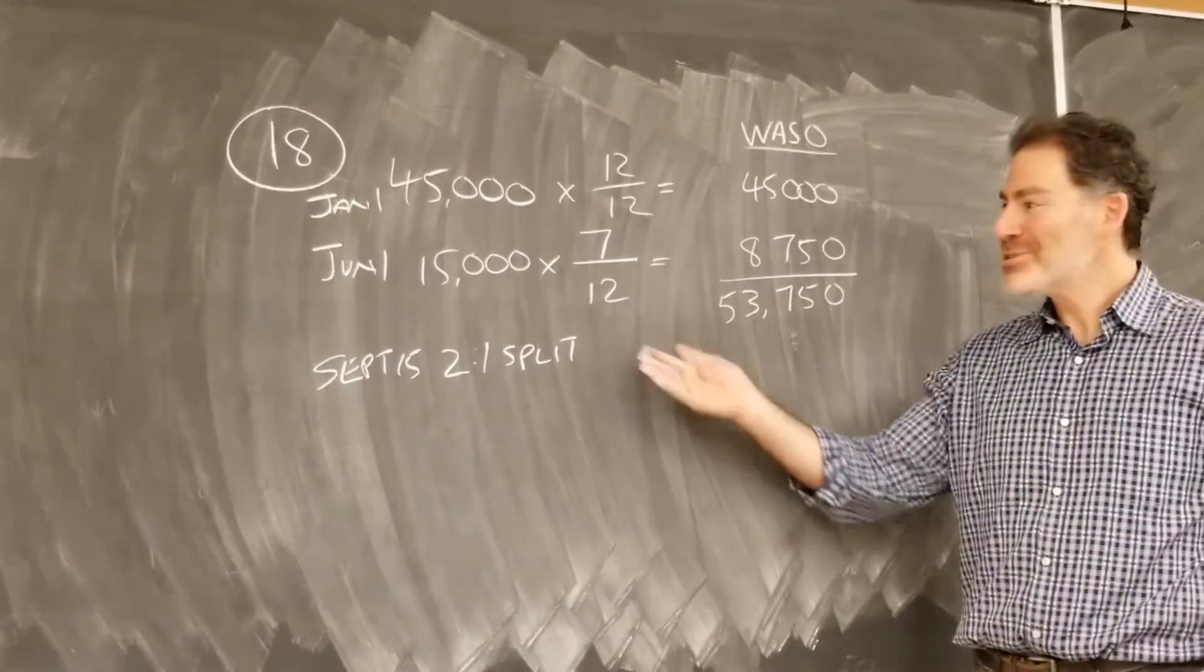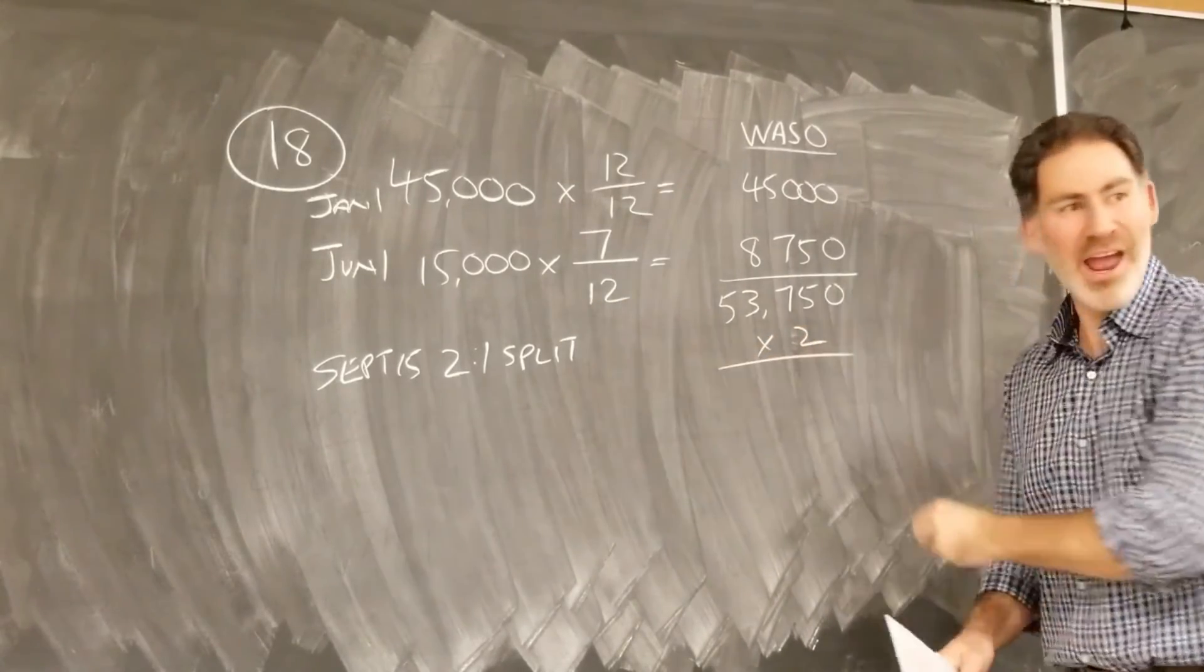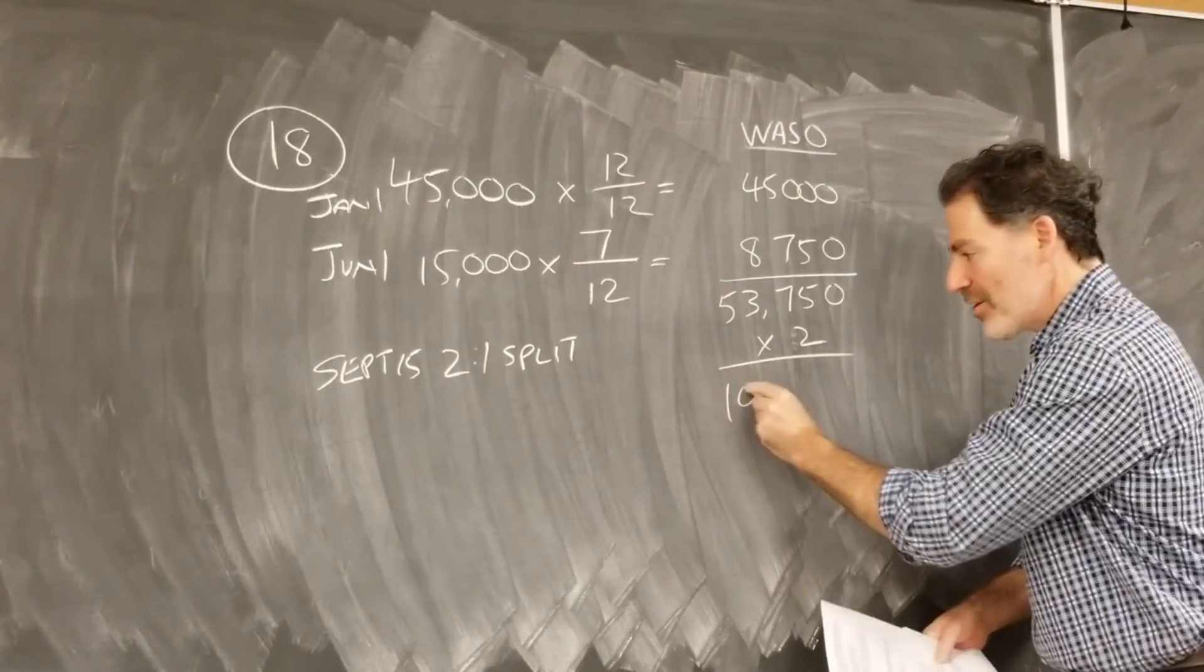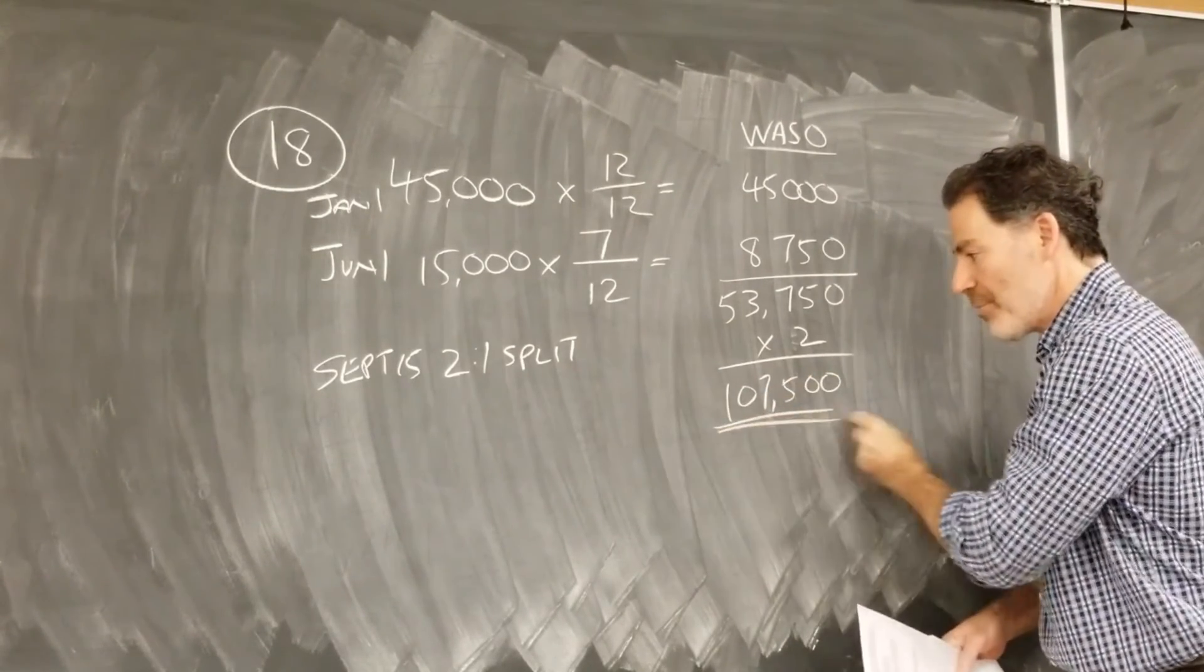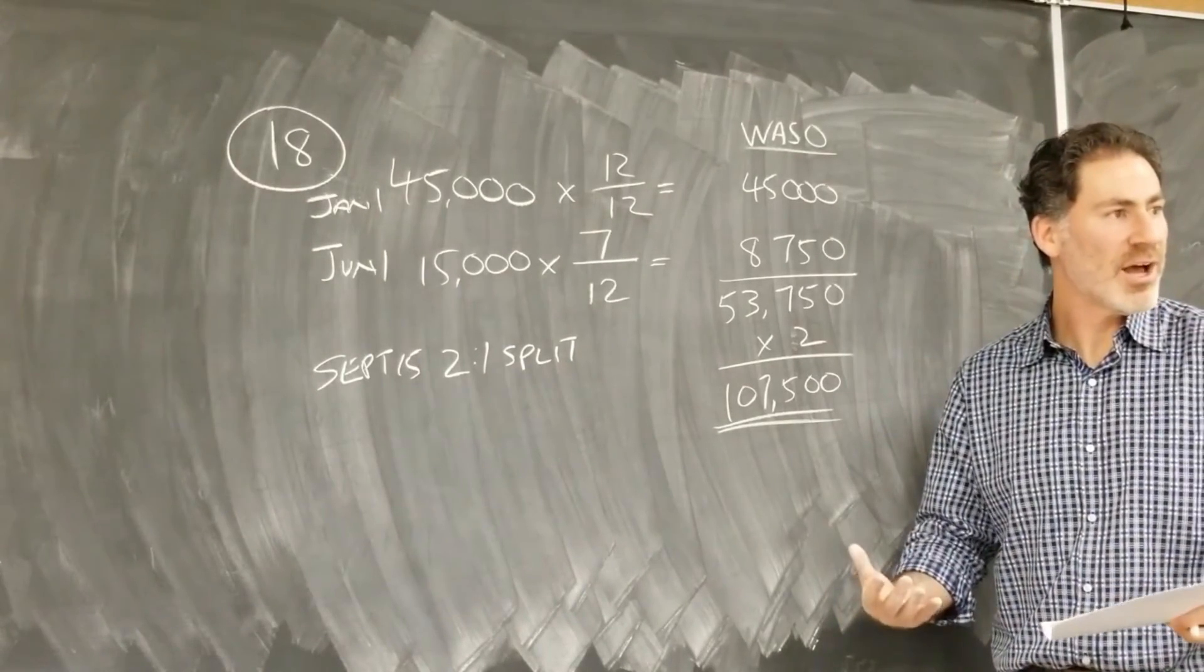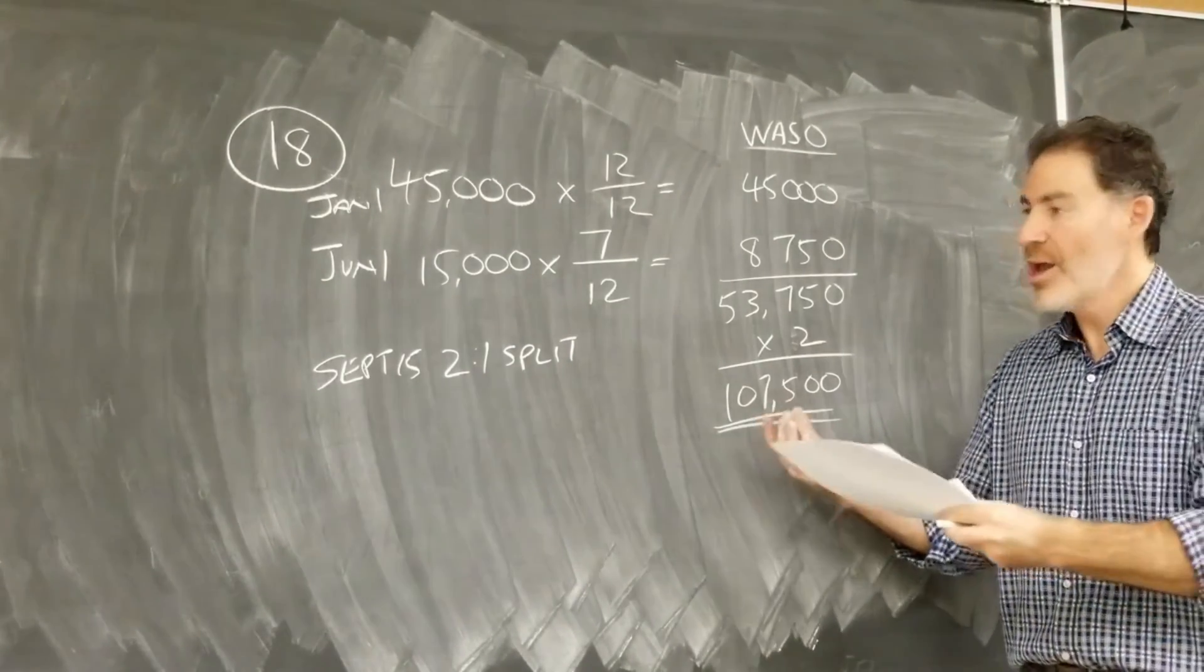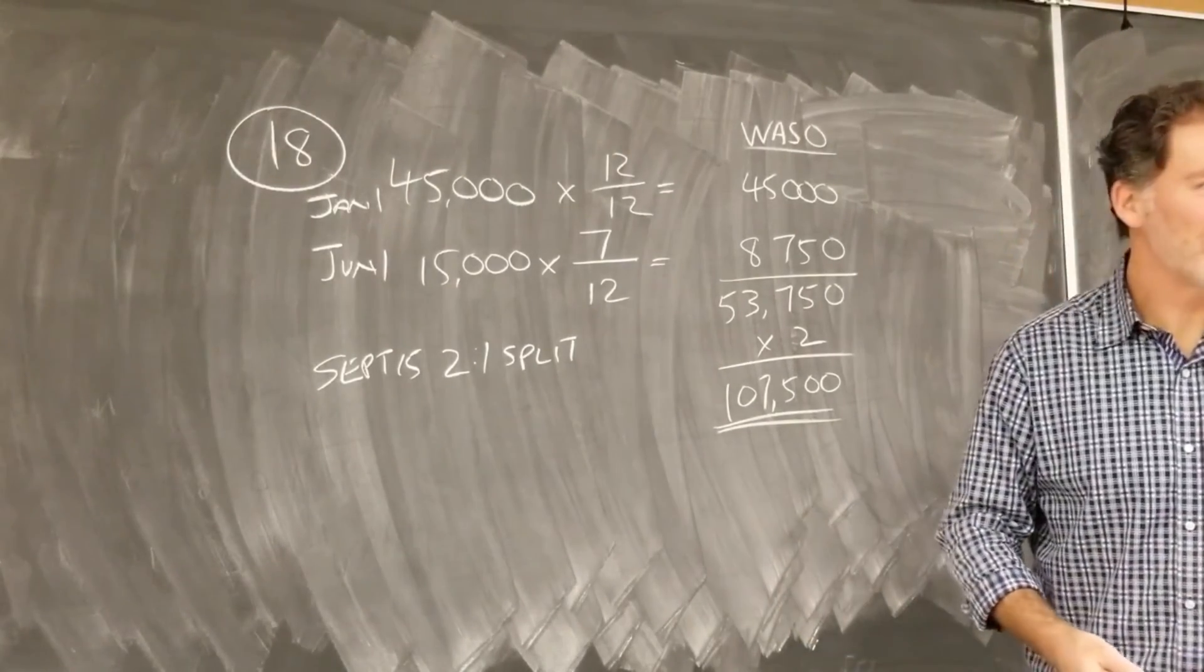And now there was a two for one stock split. Let's just multiply this by two and it will give us our answer. Here it is, 107,500 shares. This would be the number of shares that we would use in our weighted average number of shares outstanding in our earnings per share calculation. Okay, now let's move on to the next example.